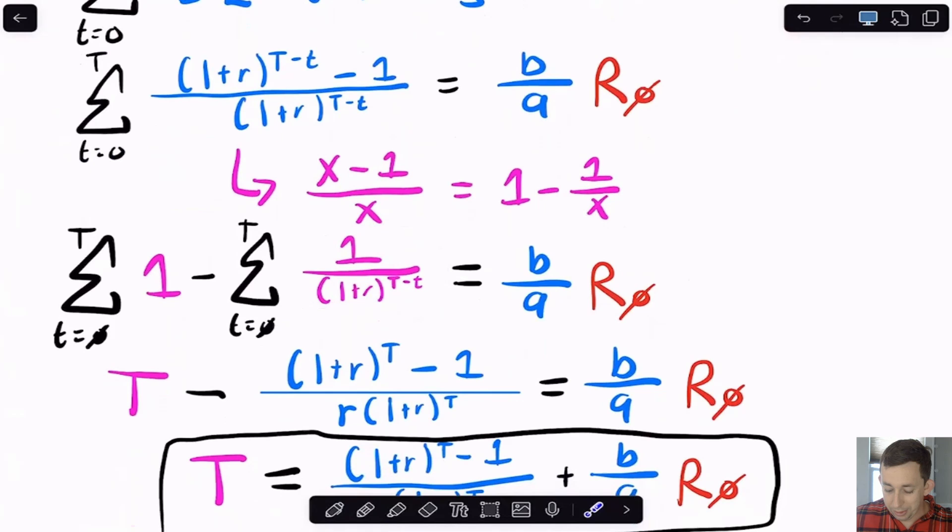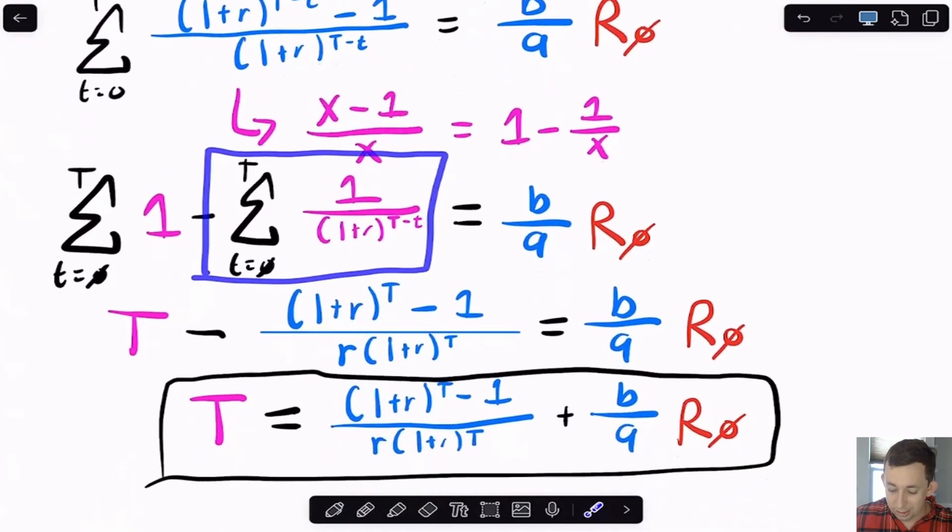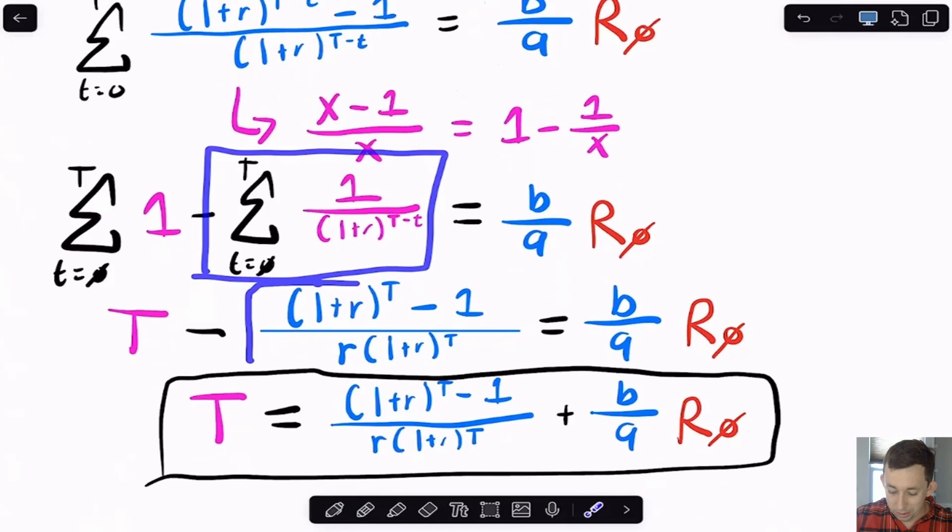And now this right here, this is just a finite geometric series, which the sum of that is going to be this guy in blue right here. If you don't recognize that I've got a separate video that's going to pop up in the top right corner right about now that's going to show you how I get that sum. But if you remember that from another class or somewhere else, that's totally fine too. And the sum from zero to cap T of one is just cap T.